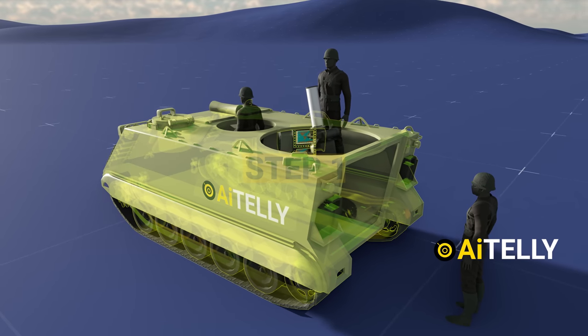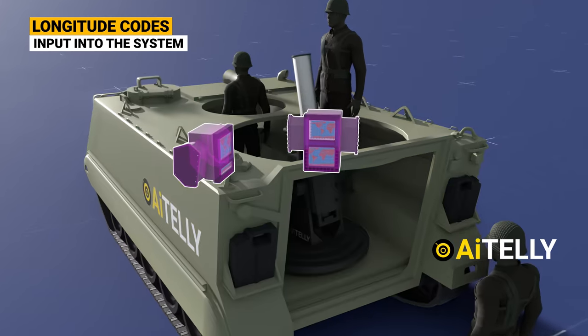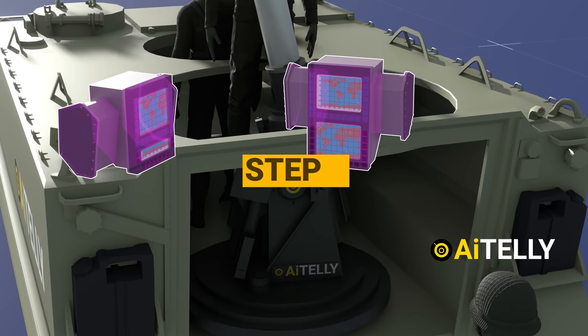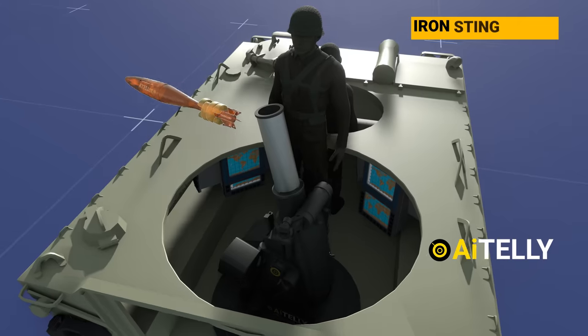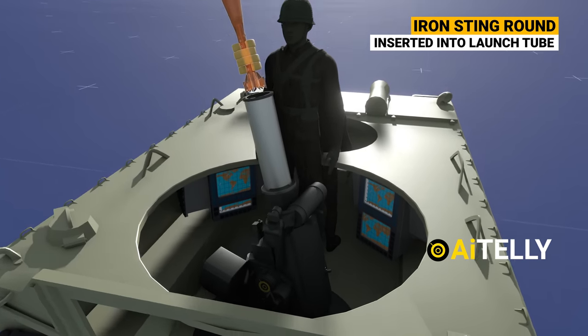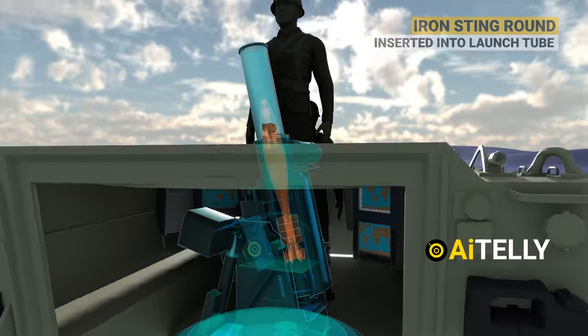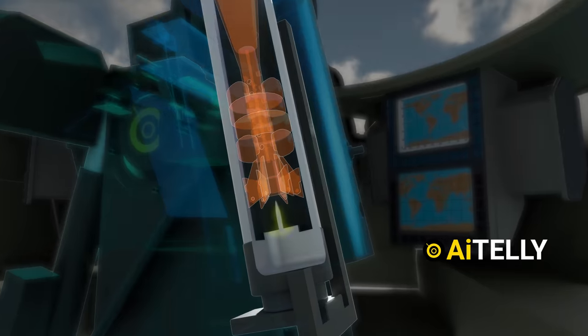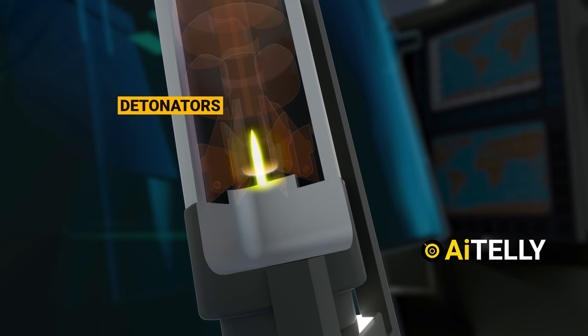Step 1: The soldier inputs the exact longitude codes received from the commander. Step 2: The soldier inserts the Iron Sting round into the launcher tube. Step 3: When the round impacts the firing pin, it activates the detonators.